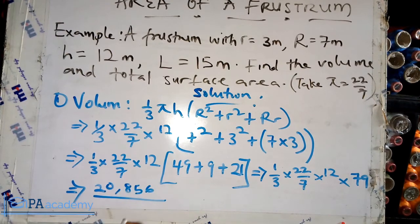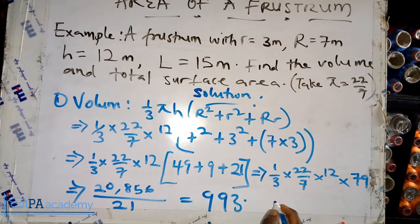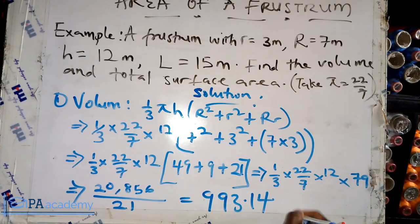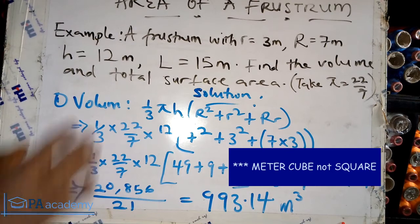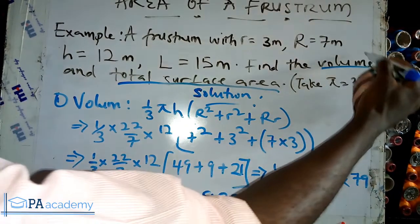22 times 12 times 79 gives us 20,856. The denominator is 7 times 3 which is 21. So dividing 20,856 by 21 gives us 993.14. Since we are dealing with volume and the units are in meters, the volume is 993.14 cubic meters. With that we have been able to get the volume of the frustum.